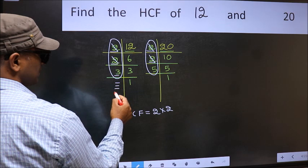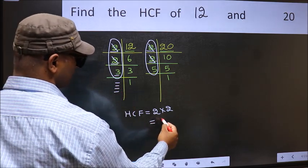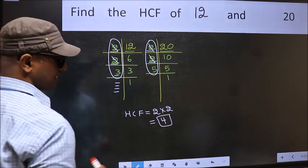No more numbers have been left out. So, our HCF is 2 times 2, which is 4. That is our HCF.